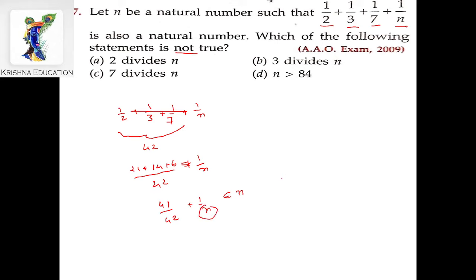So if this sum is a natural number, then n equals 42. We have n = 42.